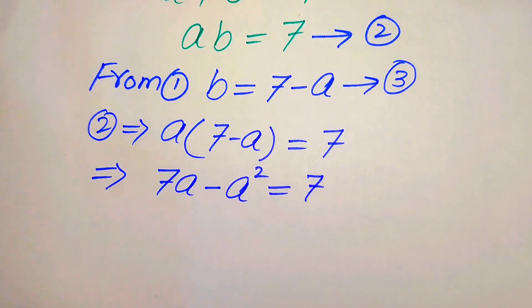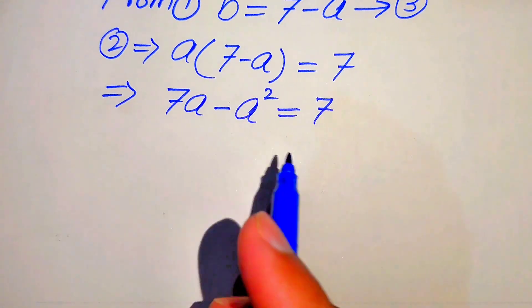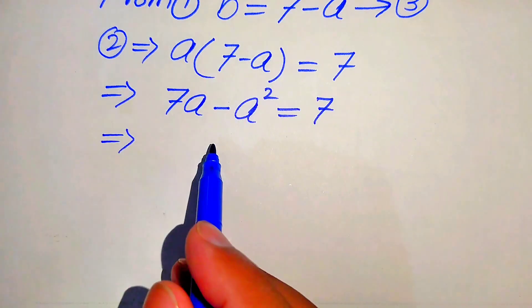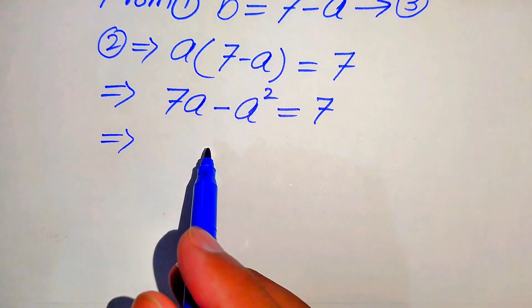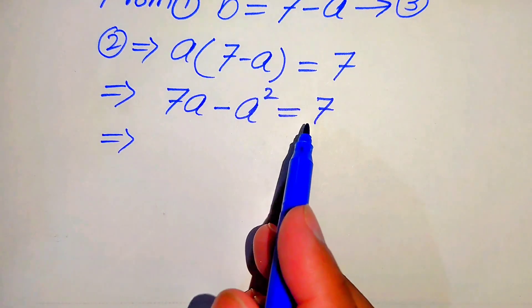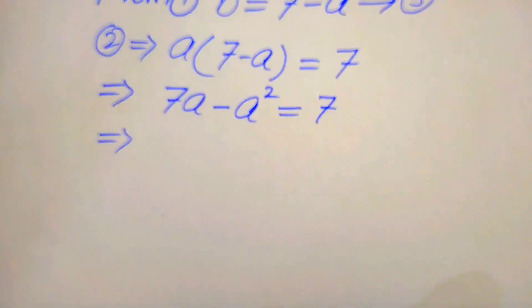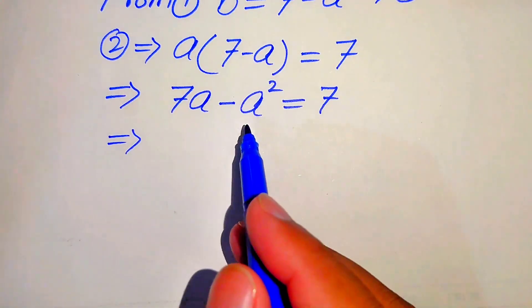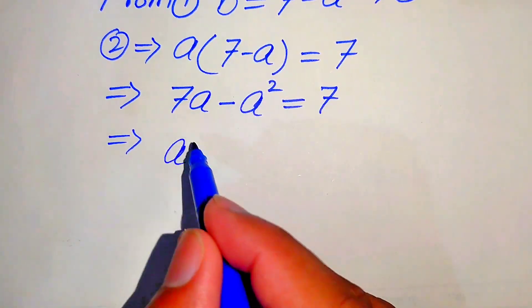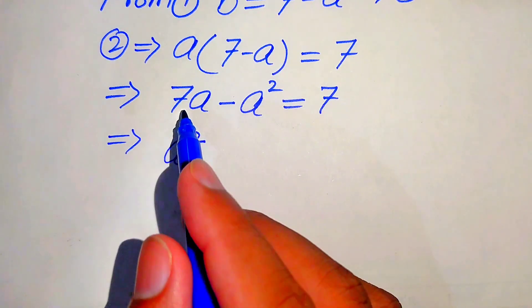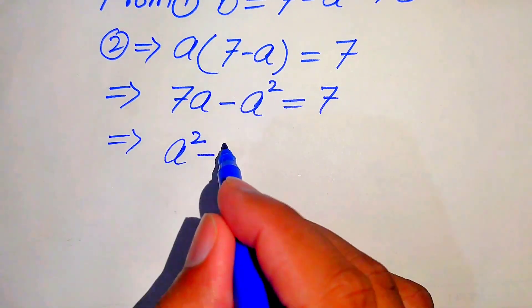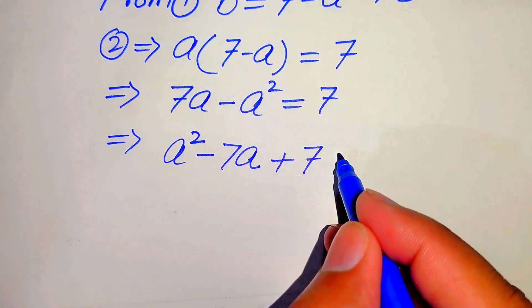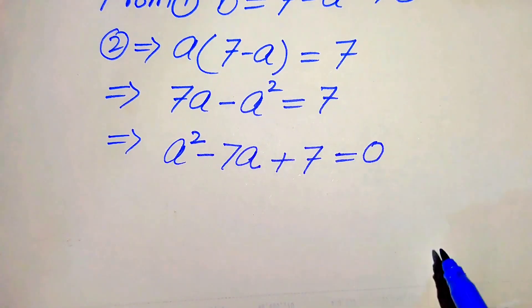In the next step we rearrange these terms and write the quadratic equation in standard form. Moving the terms to the right hand side: minus A squared becomes plus A squared, 7A becomes minus 7A, giving A squared minus 7A plus 7 equals 0.